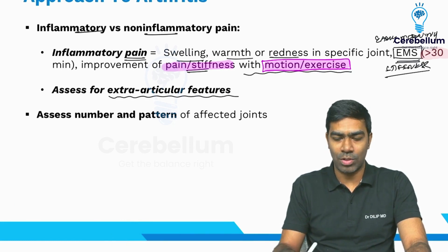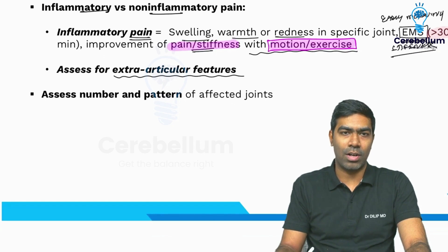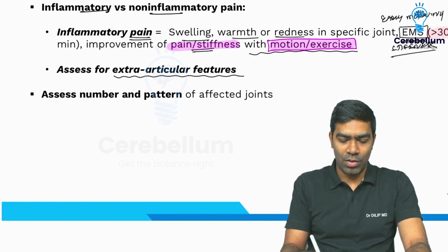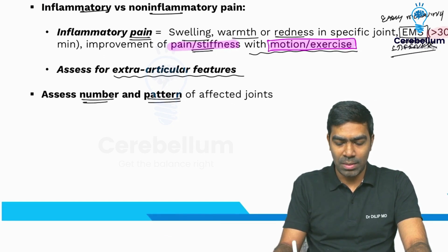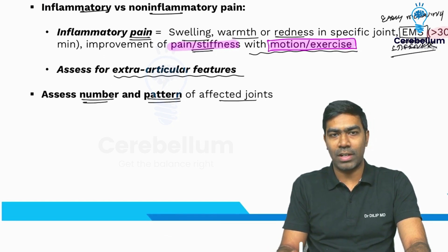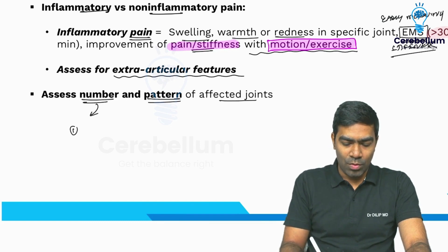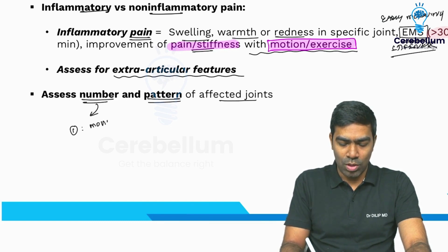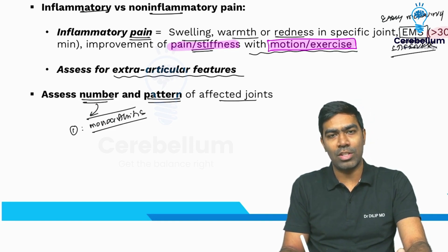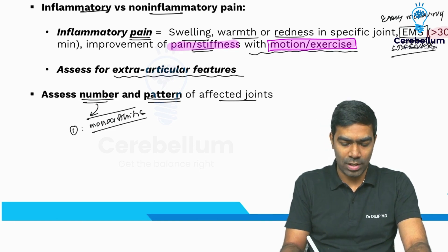In inflammatory arthritis like rheumatoid arthritis, you have to watch for extra-articular features as well — we will talk about that in detail later. You also have to assess the number and pattern of affected joints. If only one joint is involved, that's called monoarthritis, and most often monoarthritis will involve a large joint like the knee joint.